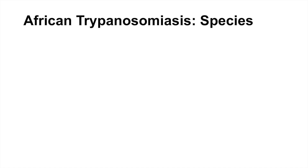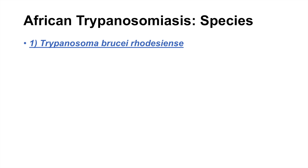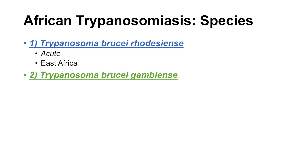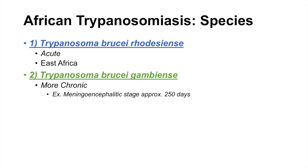So what are some of the Trypanosoma species that cause African trypanosomiasis? One of the species is Trypanosoma brucei rhodesiense, which causes an acute illness and is more located in east Africa — the eastern sub-Saharan African region. The second species is Trypanosoma brucei gambiense, which causes a more chronic condition. As opposed to brucei rhodesiense, which causes an acute and rapid illness, brucei gambiense causes a more chronic and slowly progressing illness. An example of this is the meningoencephalitic stage, which takes about 250 days to occur.